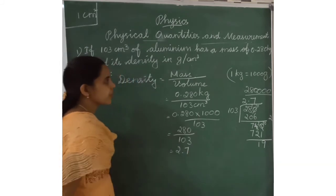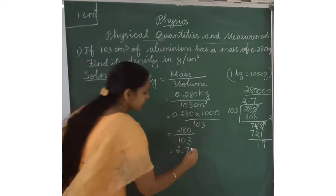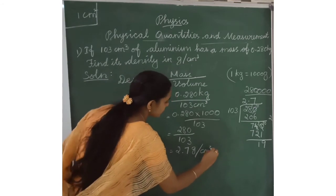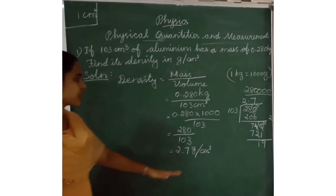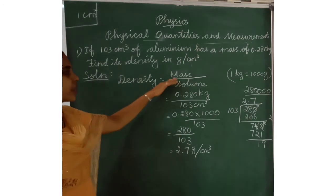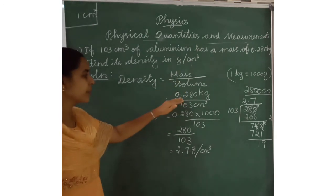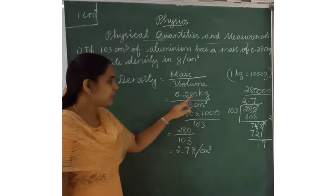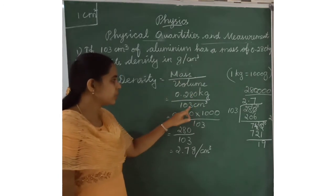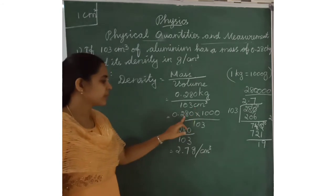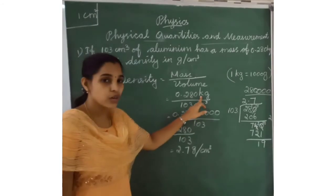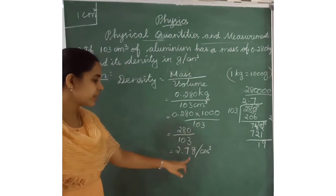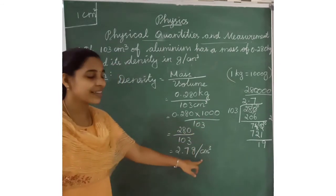So 280 divided by 103 gives us 2.7 g/cm³. The unit is gram per centimeter cube. The method is: write the formula, substitute mass and volume values, convert kg to g by multiplying by 1000, then divide to get the answer.